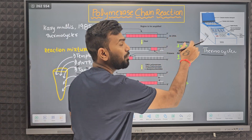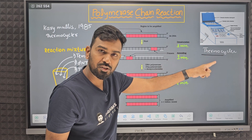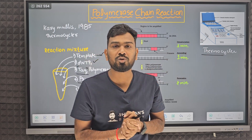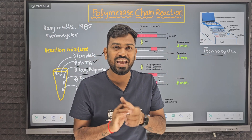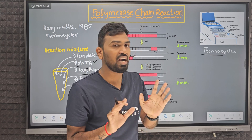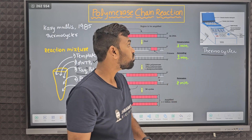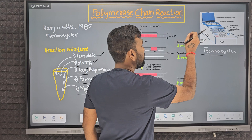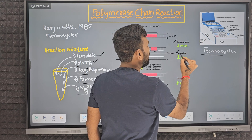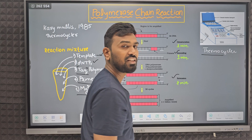In each cycle there are 3 steps. I placed this test tube in the machine and now many copies of my desirable gene are going to be made. The 3 steps in each cycle are: 1st step — Denaturation, 2nd step — Primer Annealing, 3rd step — Extension.